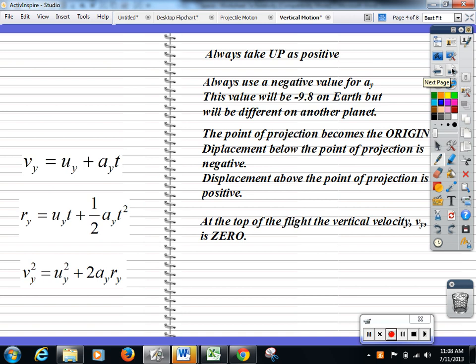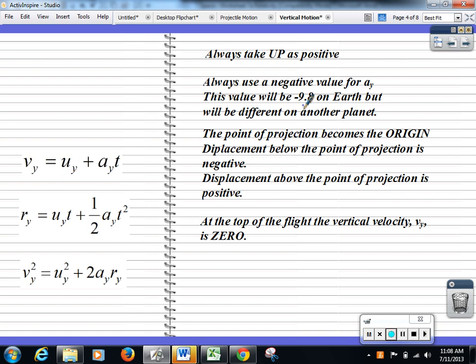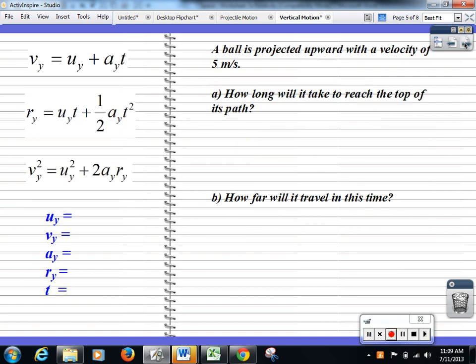It's just that always 9.8. However, the HSC, because this content is called space, we can be doing this on any planet. And 9.8 can change to any other one. We could give you the radius of the moon and the mass of the moon and you can work out the new g and use it. The point of projection becomes the origin. Displacement below the point of projection is negative and displacement above is positive. And don't forget, at the top of the flight, vY equals 0 because it's going to return. That's just a summary of what I just said.